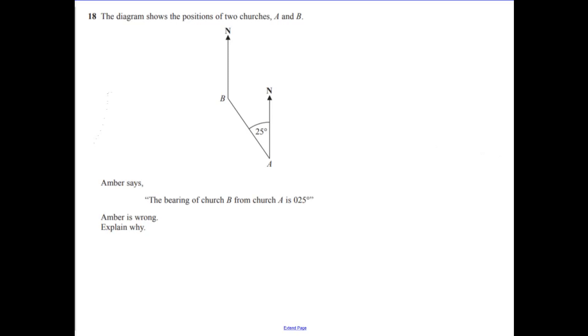Question 18. Diagram shows the positions of two churches. So we've got A and we've got church B.